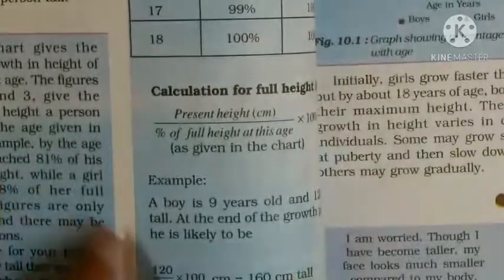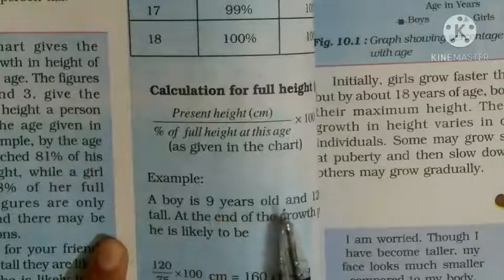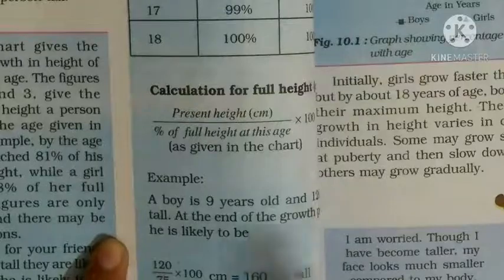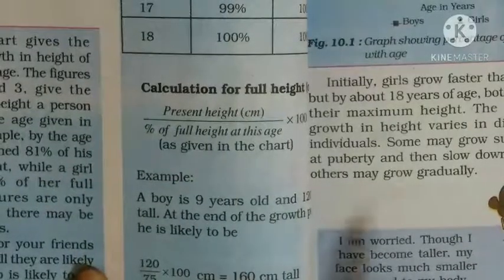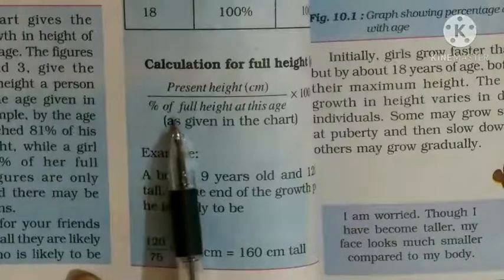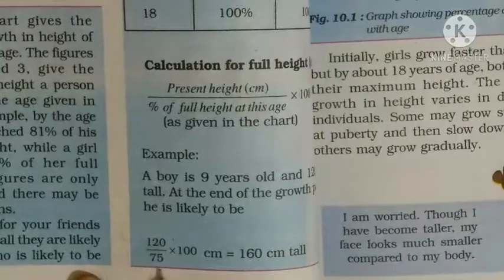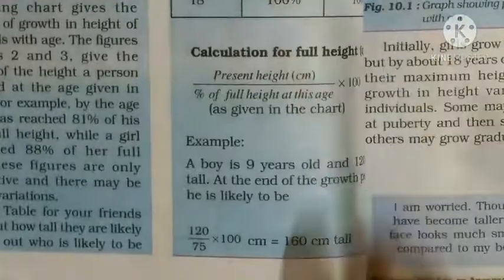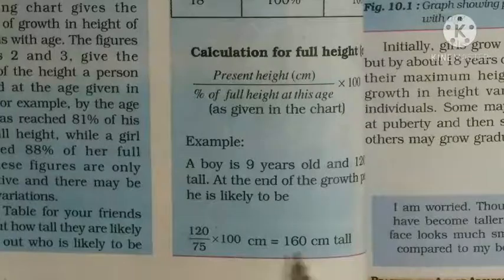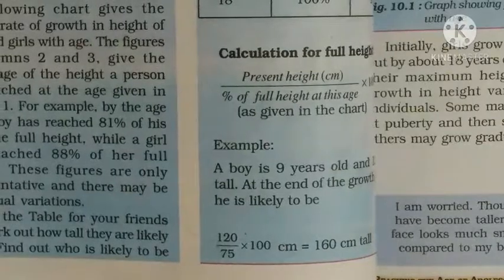यहाँ एक example दिया है — a boy is nine years old and 120 centimeters tall. At the end of the growth period, he is likely to be: formula के according, height 120 upon percent — nine years के boy के लिए table में 75% दिया है — upon 75, into 100 = 160 centimeters tall होना चाहिए। ऐसे आप अपनी class के students के साथ calculate कर सकते हैं।